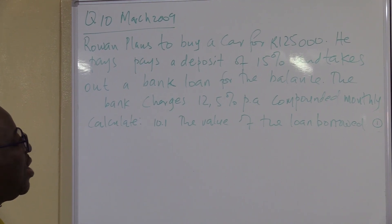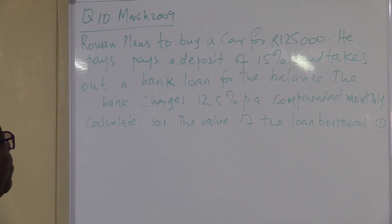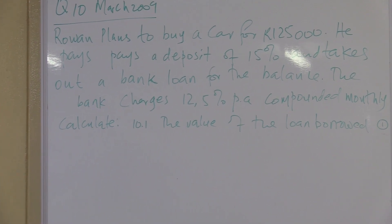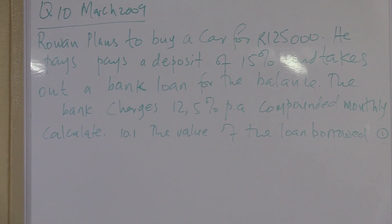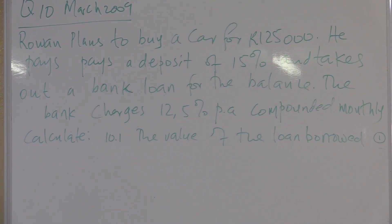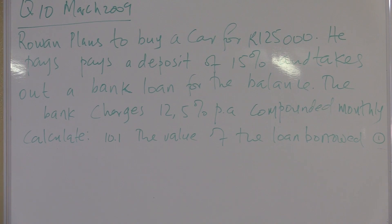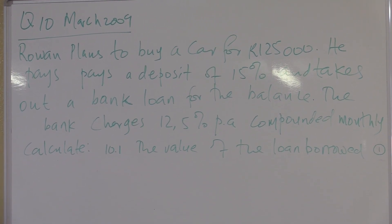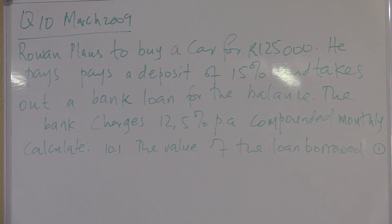Rowan plans to buy a car for $125,000. He pays a deposit of 15% and takes out a bank loan for the balance. The bank charges 12.5% per annum, compounded monthly. So I know that my N, I divided by 12. My I, I divided by 12. Calculate, number one, the value of the loan.